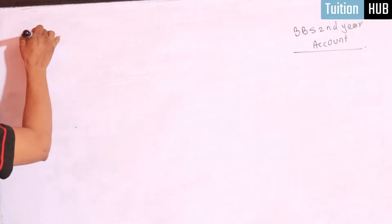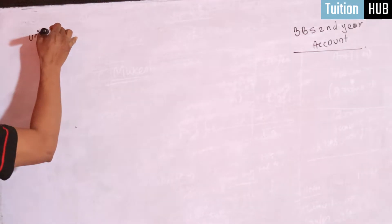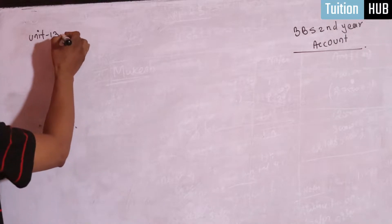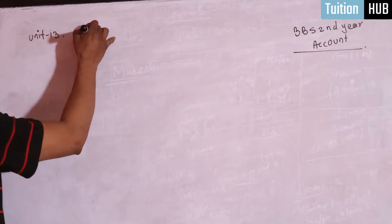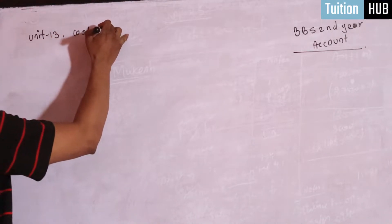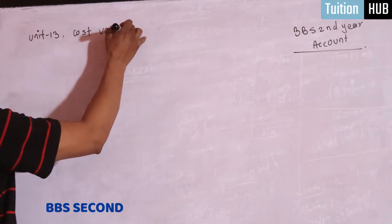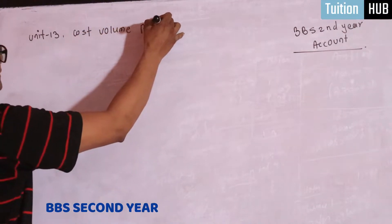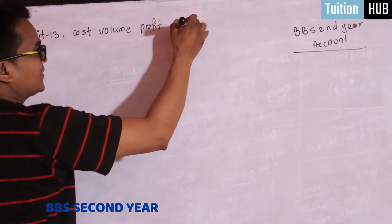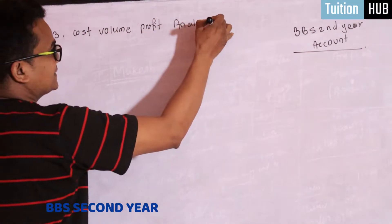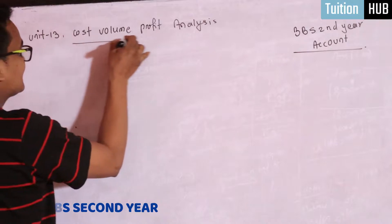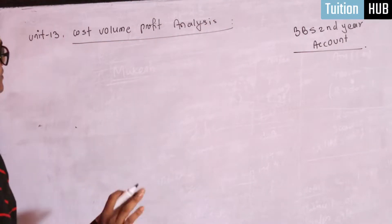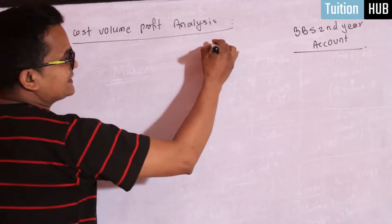So, Unit 13: Cost Volume Profit analysis. This is the basic work — when you look at the courses at school, you will also look for the cost volume profit analysis.